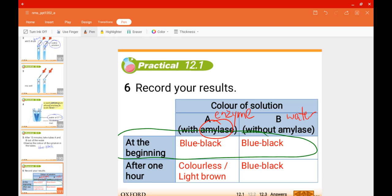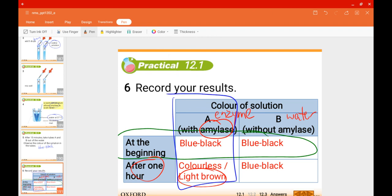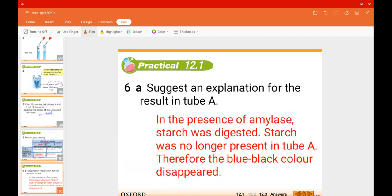After 15 minutes or after one hour, you will notice that for test tube A, the color becomes light brown or colorless, whereas for test tube B, it becomes blue-black. Why is this such an interesting observation for test tube A? Very simple. Just like I mentioned earlier, in the presence of the enzyme amylase, the starch was digested into sugar. Because there is no more starch present in test tube A, the blue-black color will disappear.